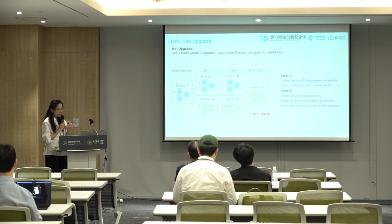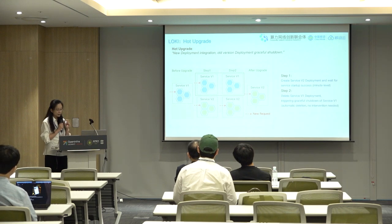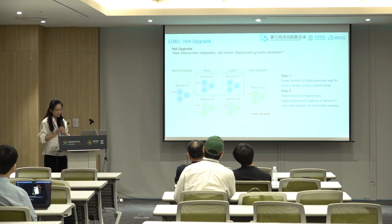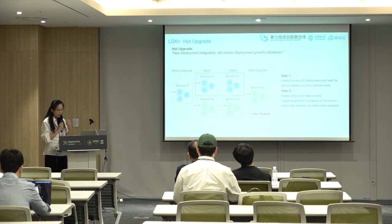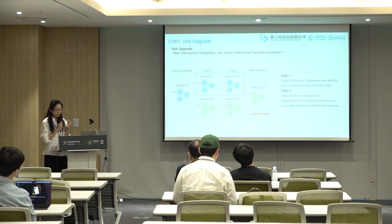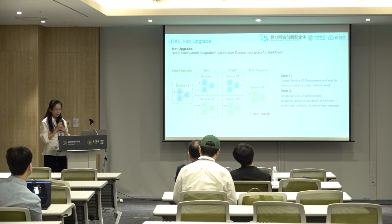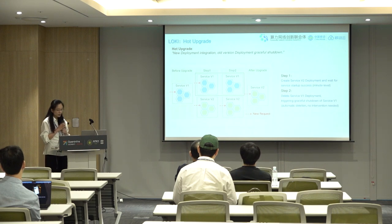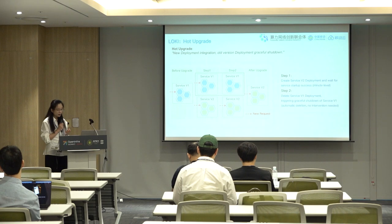When we start a hot upgrade, we do these steps. First, we delete the old version deployment and send a request to delete all pods under the deployment. Then the deployment delete request is captured by the webhook. If the webhook returns true, the deletion is allowed and the old version deployment will be directly deleted. If it returns false, the delete request is added to the scheduling queue, waiting for the next trigger. The parameters written by this method depend on whether all old version service workers have completed processing the accepted requests.